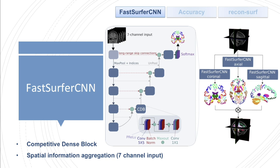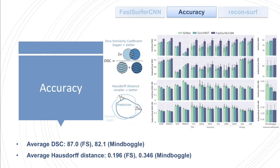Within each FCNN, we incorporate local and global competition via competitive dense blocks and competitive skip pathways, using max-out at the end of each long-range skip connection, as well as multi-size information aggregation by using a seven-channel input. These modifications specifically tailor network performance towards the accurate recognition of both cortical and subcortical structures, as can be seen in our accuracy analysis.